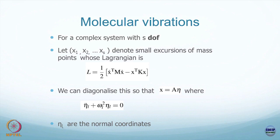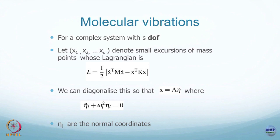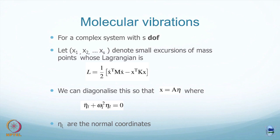If you try to find the equations of motion for this Lagrangian, there will be a coupled set of second-order equations to solve. The only way to make them uncoupled is by doing a suitable diagonalization. Find the basis eta for those diagonal eigenvalues — the diagonal eigenvalues are the frequencies. These eta are what we call normal modes.